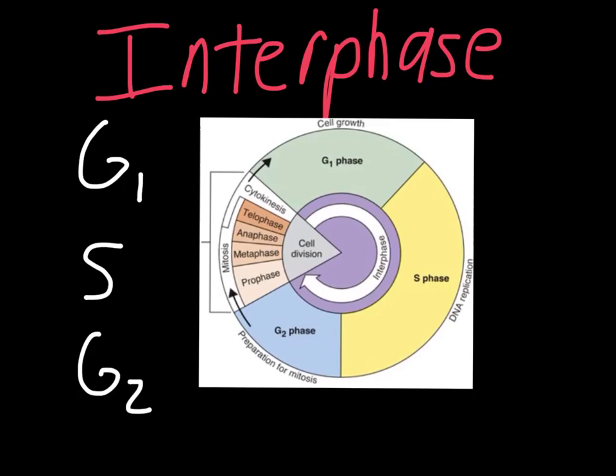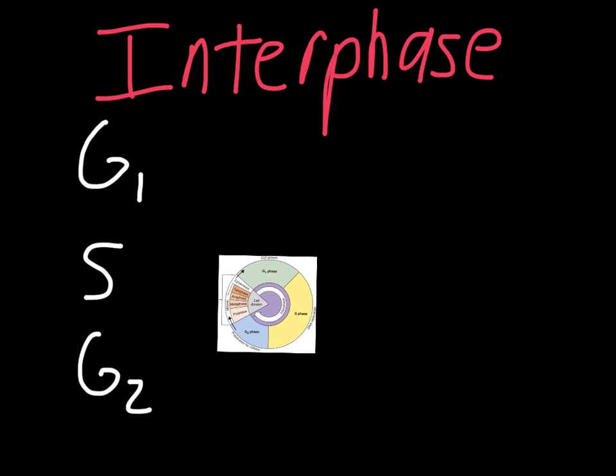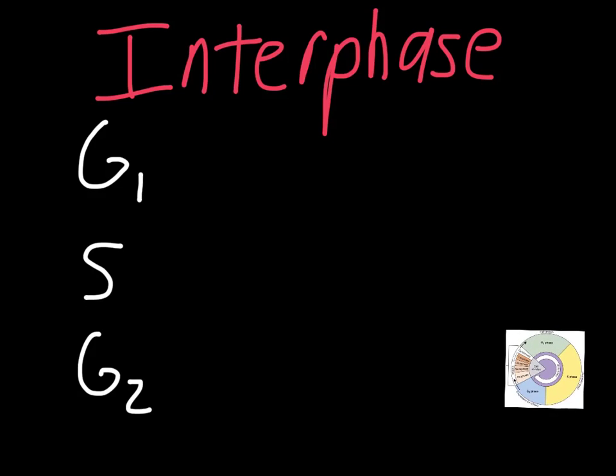It just makes it easier to string the ideas together. So if you're looking at the diagram, it says during G1, the cell is growing. So there's things that are going on here that's preparing it for division. So we're going to think of G1 just as a period of growth.